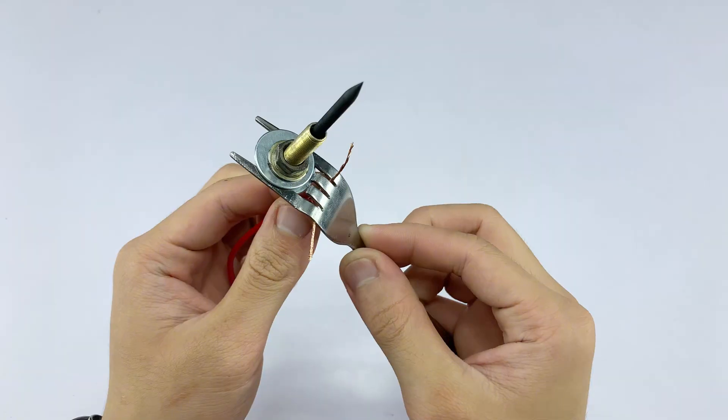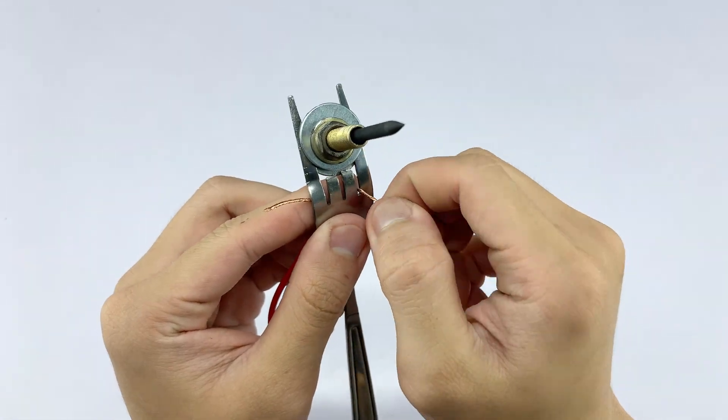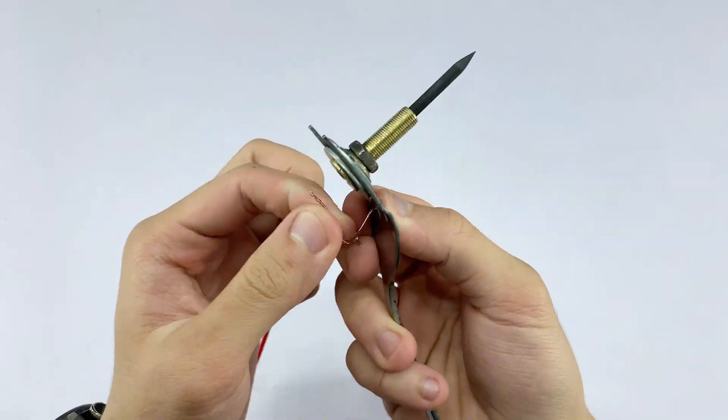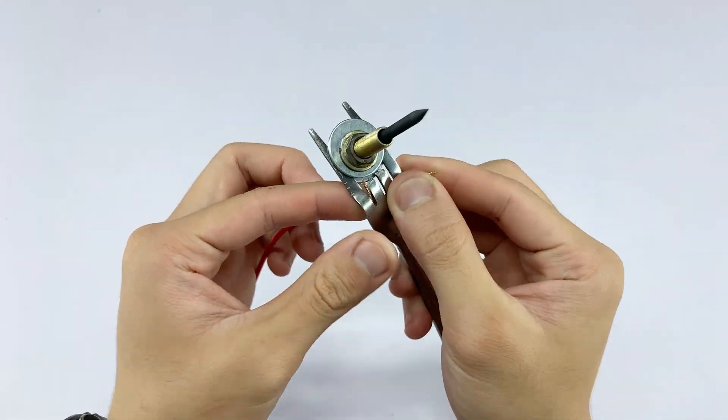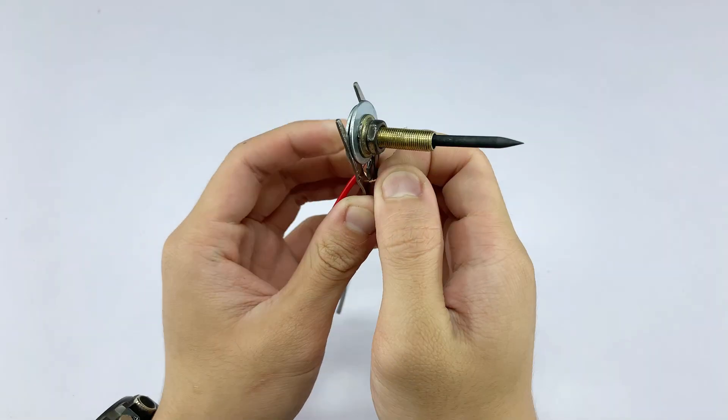I'm wrapping one stripped end of the red wire tightly around one of the outer tines of the fork. This ensures a complete circuit across the tines and, ultimately, through our carbon rod.